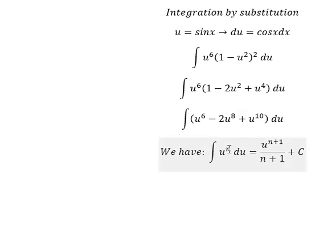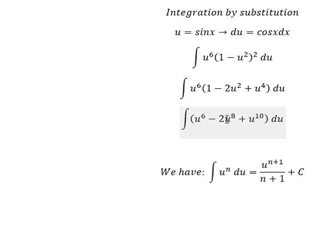So I will apply the power rule: u^7/7 - 2u^9/9 + u^11/11 + C. And now we can do the substitution back.